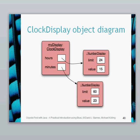The object diagram, if you can remember, looks like this. The clock display has two fields: it's got the hours field, which is a number display type, and the minutes field, which is also a number display type. Those fields point at those specific objects, and those objects have got specific integer values. The hours one has got a limit of 24 and the minutes one has got a limit of 60.